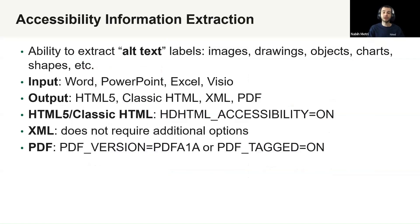Document Filters strives to extract every piece of information from documents, and that includes accessibility information from Microsoft Office documents. This not only assists in extraction, but allows for accessible output documents to be created. The supported output documents include HTML5, Plastic HTML, XML, and PDF.